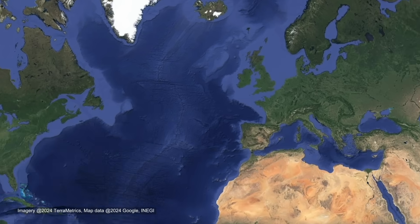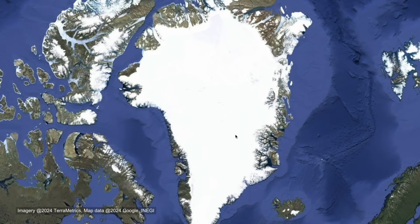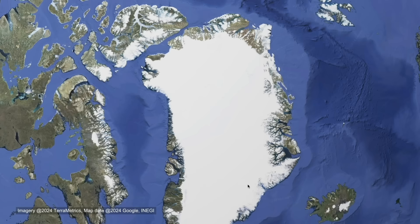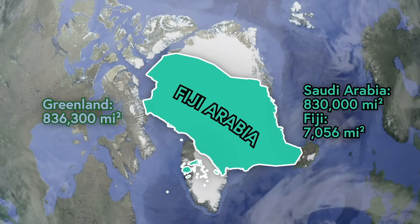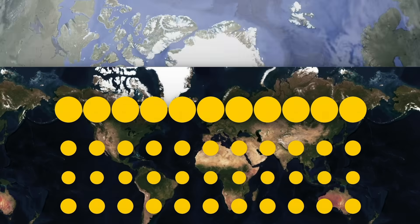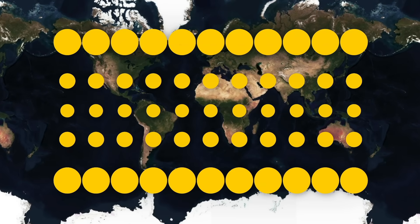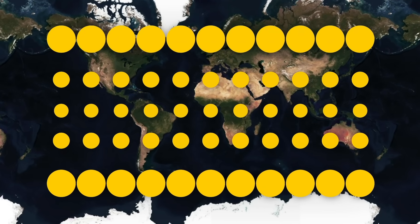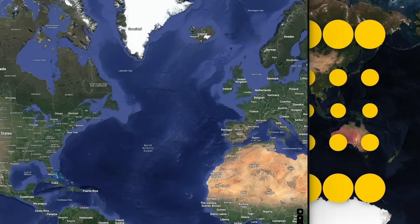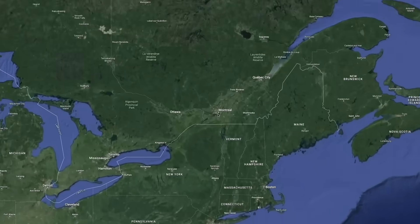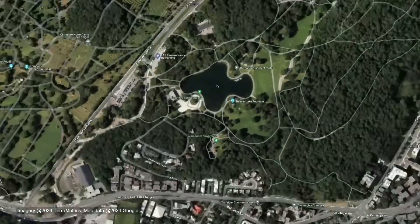On maps like this one, places on the equator are the least distorted, while Greenland looks enormous even though it's smaller than a new country I made called Fiji Arabia. All these circles are about the same size — and if you're thinking no they're not, well, exactly. But if you zoom in on any given point on Google Maps, it gets less and less distorted as you go.